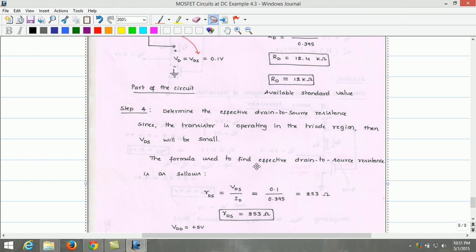The formula used to find effective drain resistance is as follows. RDS, the drain-to-source resistance or effective drain-to-source resistance across a transistor is drain-to-source voltage by drain current. VDS which is 0.1 volt, ID is 0.395 milliampere, which we get RDS as 253 ohms.